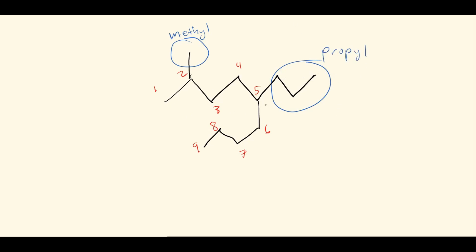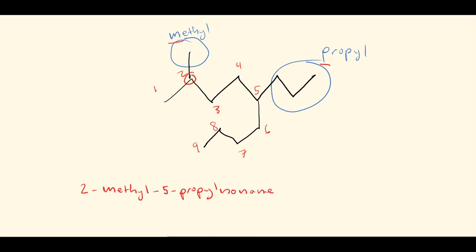Now we put all the pieces together, naming alphabetically. M comes before P, so methyl goes first — it's at carbon two, giving us 2-methyl. Then comes the propyl at carbon five, giving 5-propyl. The parent chain is nine carbons long, so it's nonane. The final name is 2-methyl-5-propylnonane.